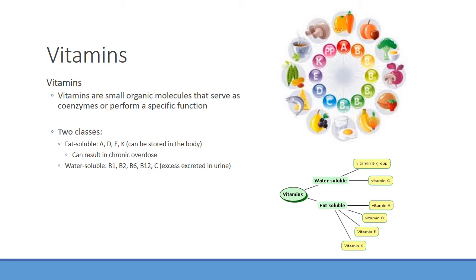Moving on to vitamins — these are small organic molecules that help perform specific functions, usually as coenzymes. We have two main classes: fat-soluble vitamins A, D, E, and K, which typically get stored within the body, particularly in the liver. That's why eating liver provides lots of vitamins K and A. However, the downside is you're more likely to have chronic overdosing with fat-soluble vitamins, which can lead to problems.